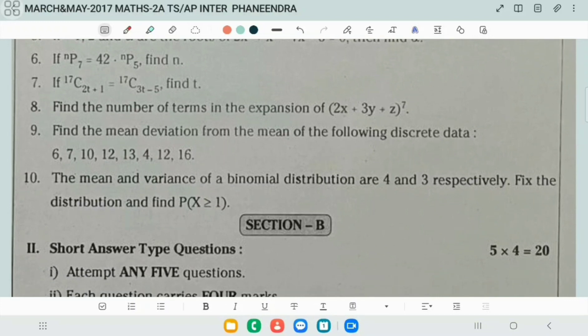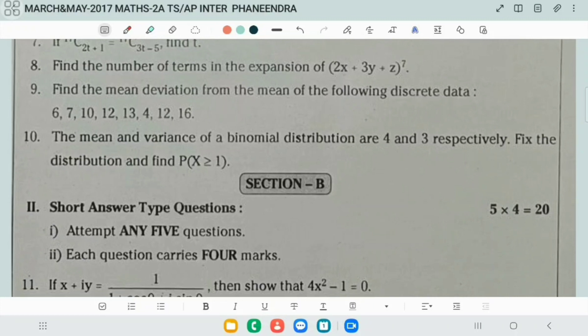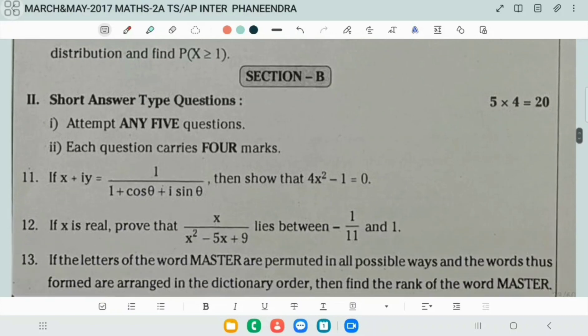And number of terms in the expansion, we already got this question. Find the mean deviation about the mean of the following discrete data. The mean, DV mean and variance of the binomial distribution. Even this question also repeated.